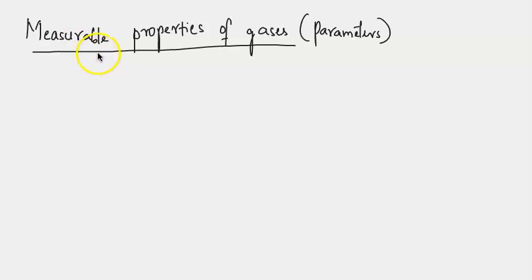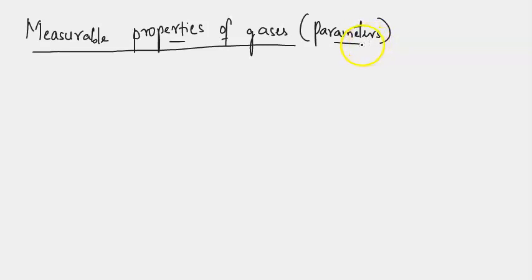In this video, let us look at the measurable properties of gases. The measurable physical properties of any substance are called parameters, so this is another name given for properties of gases.